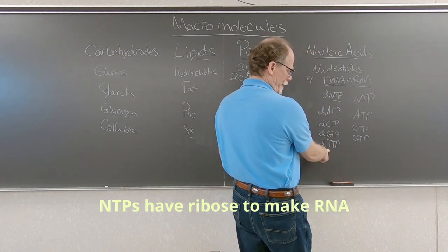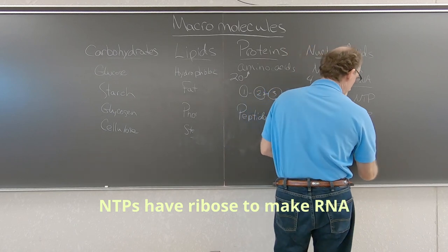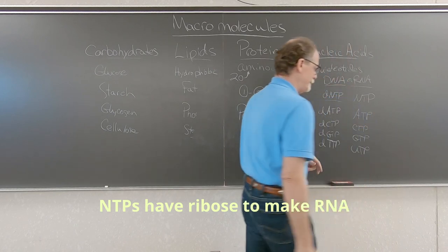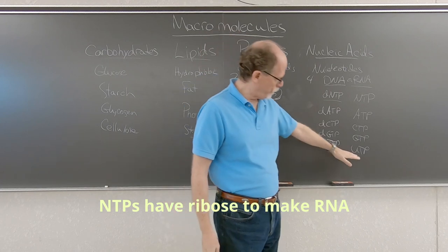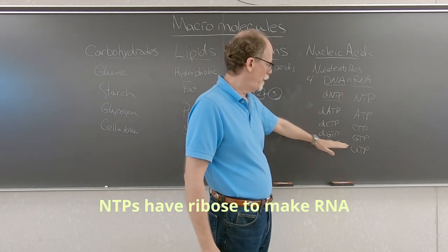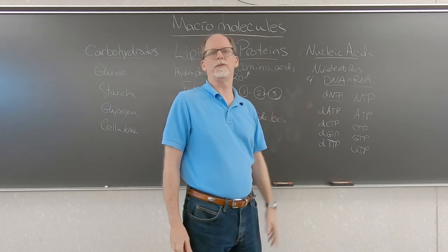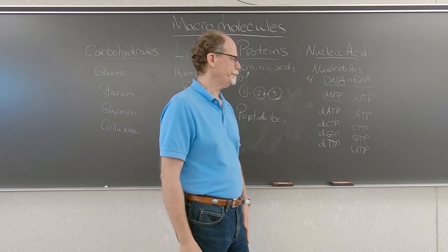We have CTP without the little d, we have GTP without the little d, we don't have ribose with the T. We have UTP. So all four of these have ribose for a sugar. All four of these have deoxyribose for a sugar.